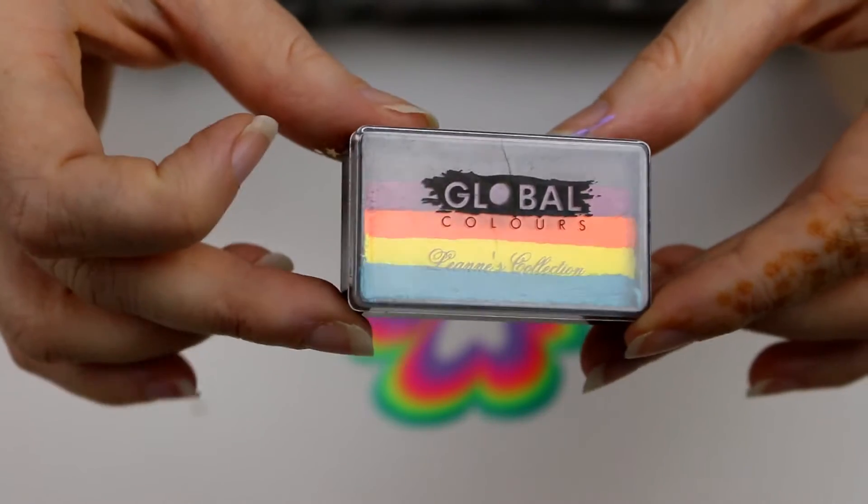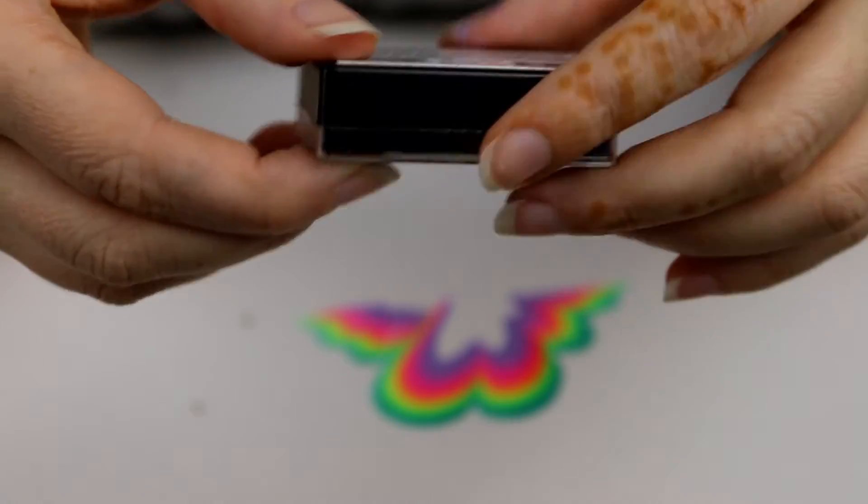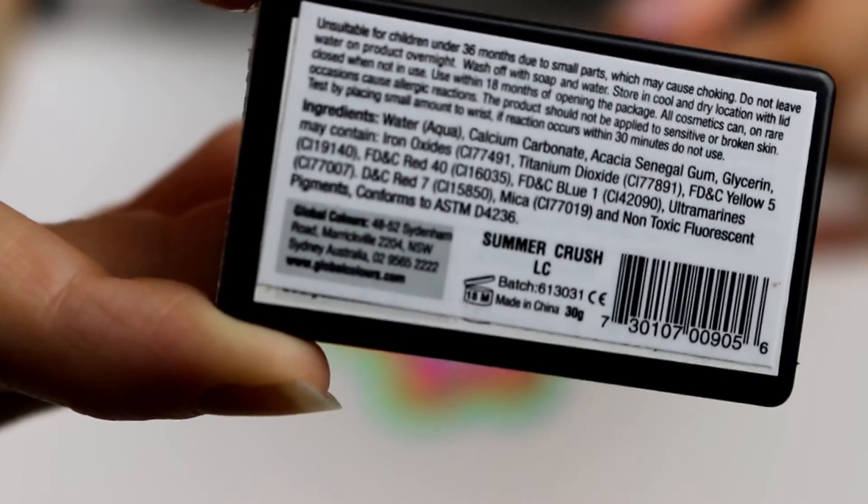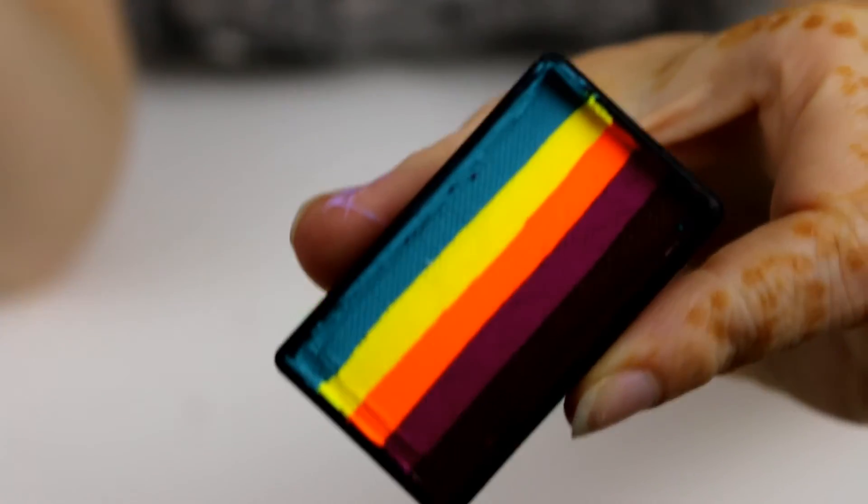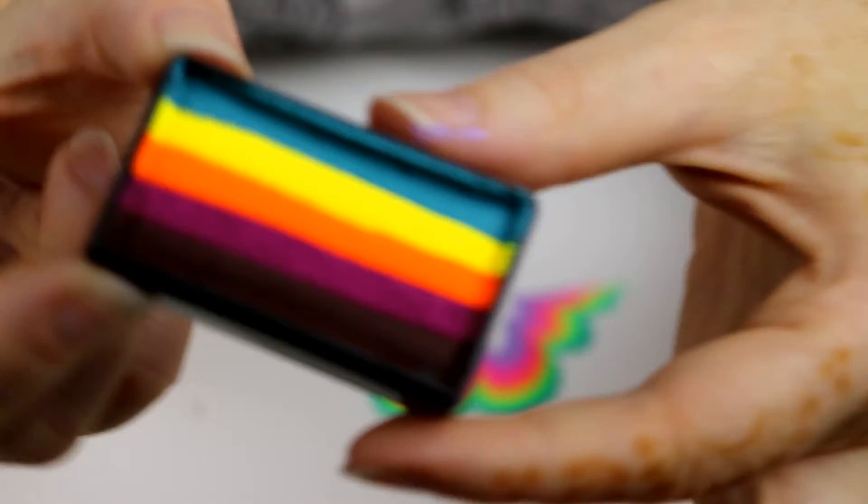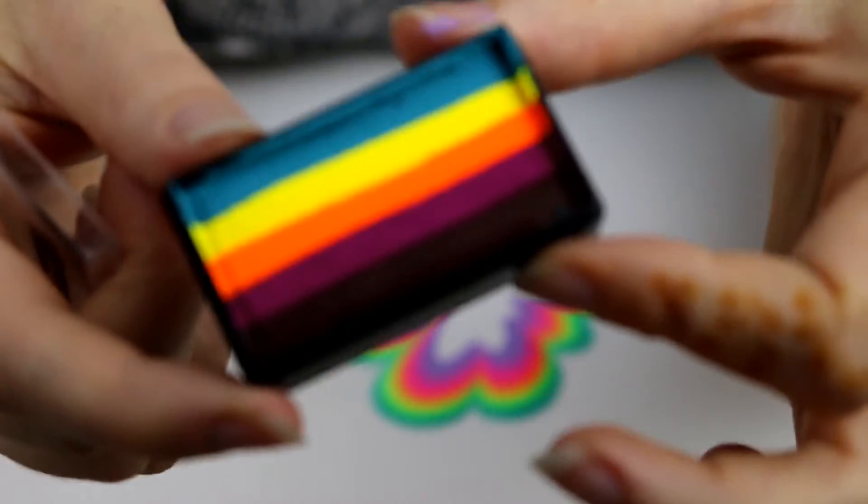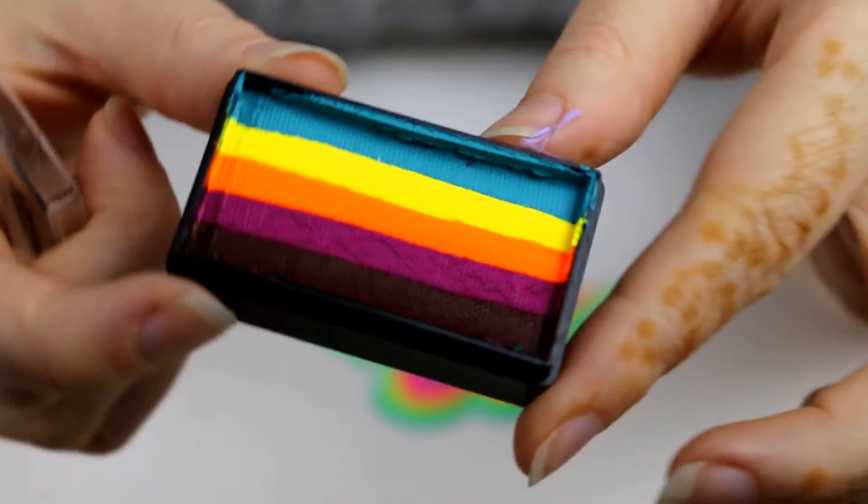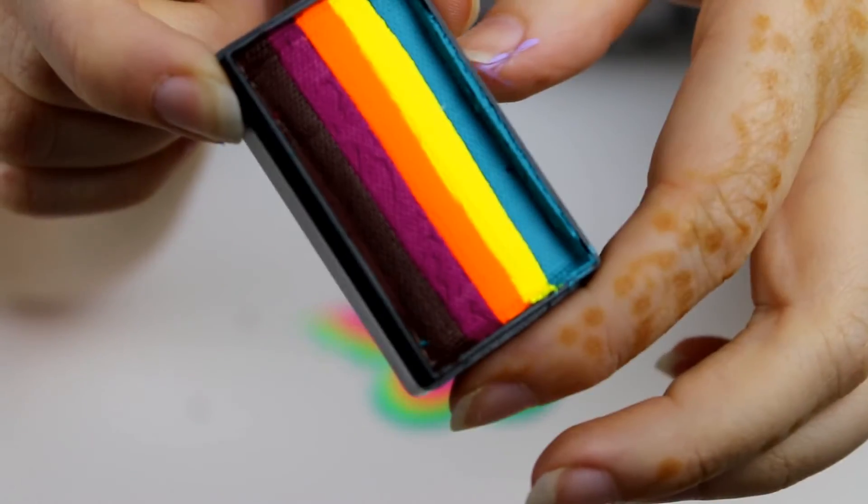The next product is the Global Colours Leanne's Rainbow Collection, and this one is in Summer Crush. This is one of my go-to rainbow colors. It's just really pretty. It's not the true rainbow, but I think this looks really nice on the skin. Everybody really likes it when I use it. I get wows from the crowd. I'd give this one a go.